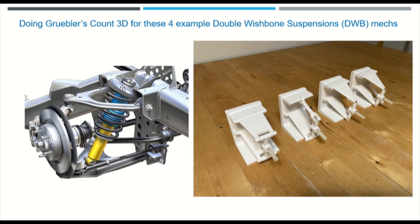Okay, this is a tutorial using Gruebler's Count 3D, not 2D by the way, on a double wishbone suspension for a car or truck vehicle.